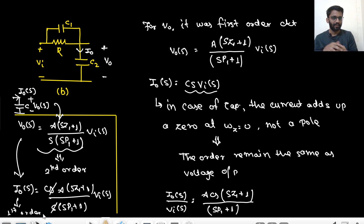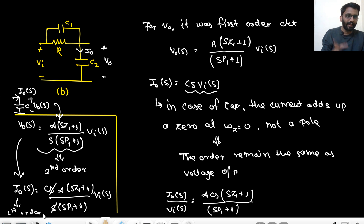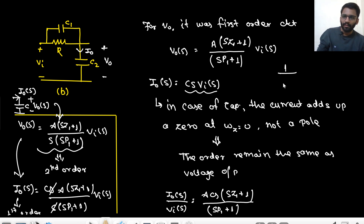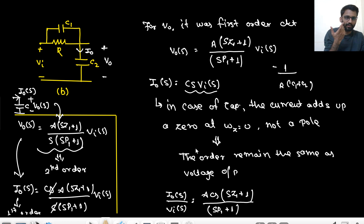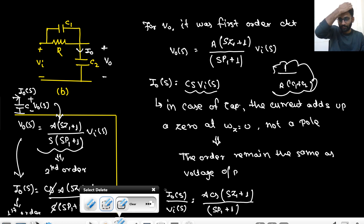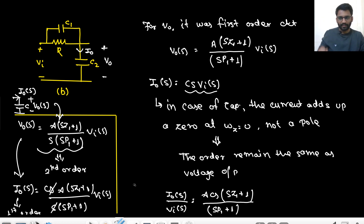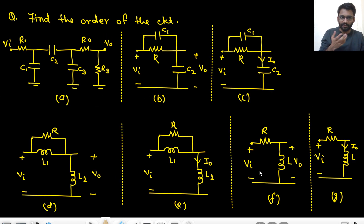But if my voltage transfer function is first order and I don't have a pole at ω = 0, then the current will surely also be first order. For example, if the pole is at minus 1/(R(C1+C2)), that's not a pole at ω = 0, so the order doesn't change when going from voltage to current output.